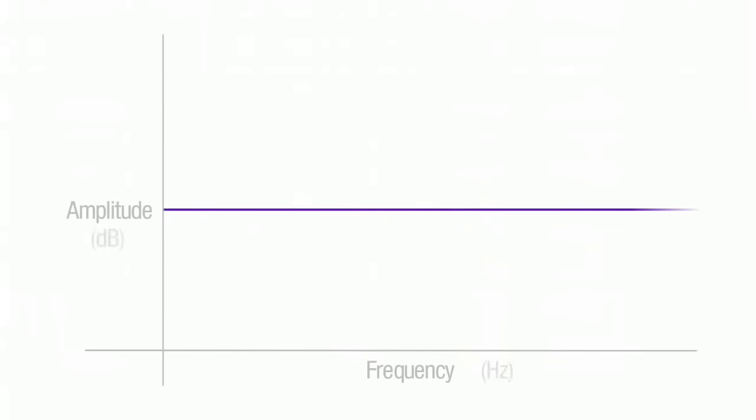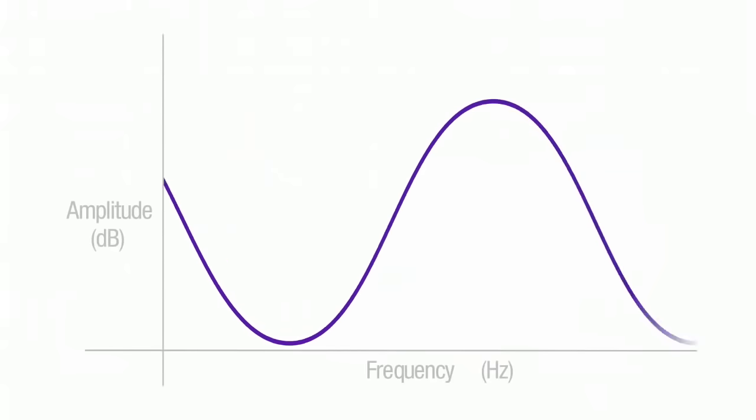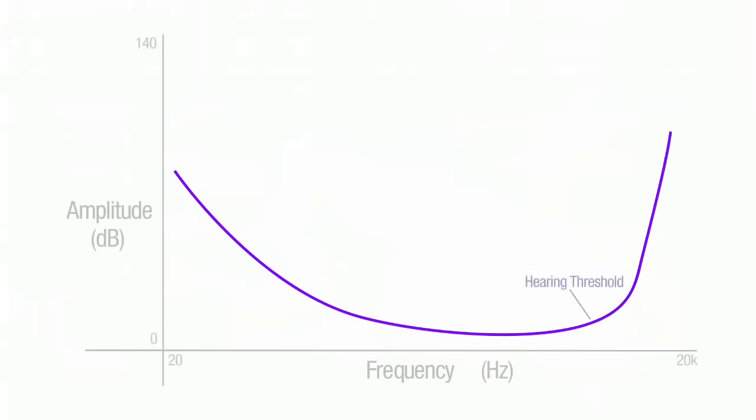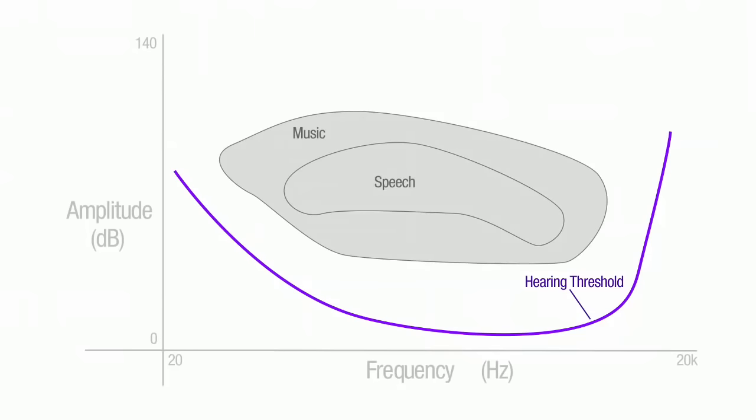Sound is characterized by amplitude and frequency. Amplitude is the intensity or volume of the sound. Frequency is the rate of vibration, which is heard as the pitch. The lower the sound frequency, the harder it is for humans to hear.